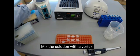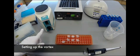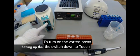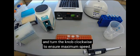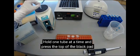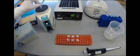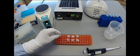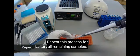Mix the solution with a vortex. To turn on the vortex, press the switch down to touch and turn the knob clockwise to ensure maximum speed. Hold one tube at a time and press the top of the black pad to initiate vibration. Repeat this process for all remaining samples.